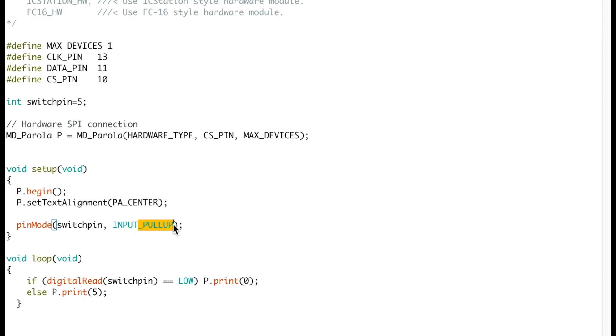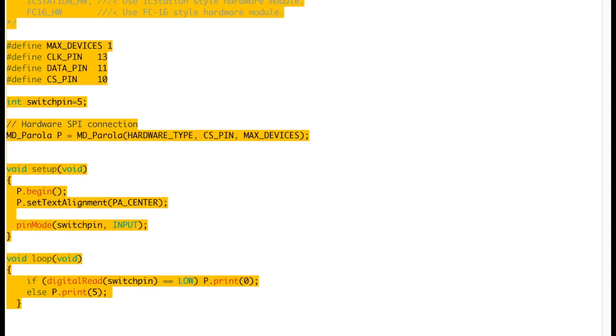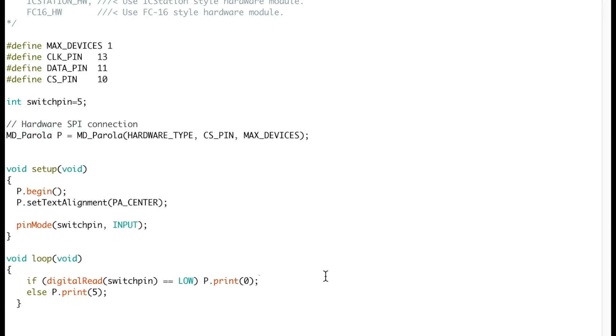So at the beginning I'm gonna be using just this, describing the tag switch pin to an input, but down the road I will change it to an input pull up to actually use the resistors inside the Arduino. So we'll see how that behaves. And then all I do, if I read the switch pin is low I print a zero on the matrix and else if it's high then I print a five. And that's it, that's all the code we're gonna use. So now let's go check out those scenarios and see how they behave with that code.